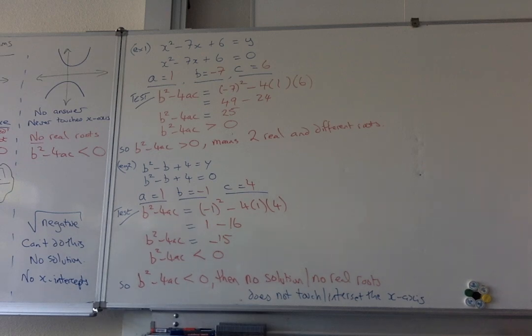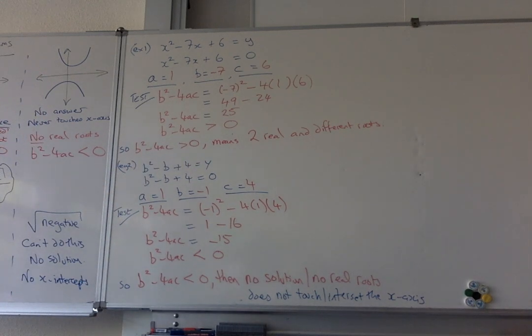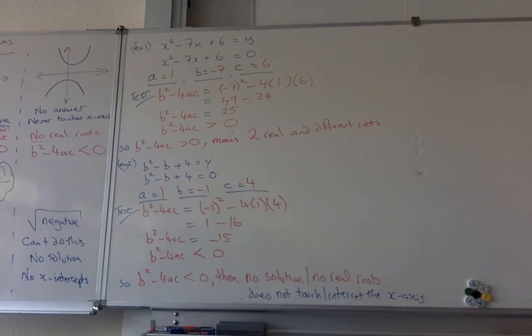And the only version that I haven't done is if it's equal to zero, then you would say it has one real repeated root. It touches the x-axis once. If it says for real roots, then this has to be greater or equal to zero. That's the only other variation. So write down the notes and then you're going to try some questions.